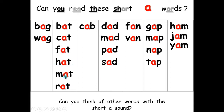M-A-T — mat. R-A-T — rat. C-A-B — cab. Cab is the same thing as taxi. D-A-D — dad. M-A-D — mad. P-A-D — pad. S-A-D — sad.